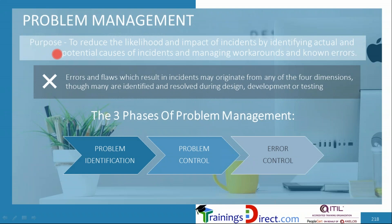While incident management focuses on minimizing the impact from service degradation and restoring the service as soon as possible, problem management focuses on reducing the likelihood and impact of incidents. It does this by identifying the causes of incidents which have happened and causes of incidents which might happen in the future, and for those incidents it attempts to create workarounds — temporary fixes.